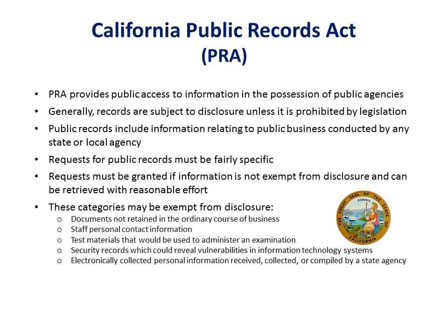The California Public Records Act, or PRA, outlines which information possessed by public agencies is to be considered public information and how a consumer can obtain it. Any records relating to public business whose release is not restricted by legislation must be provided to a member of the public, as long as the request for information is fairly specific and the records can be retrieved with reasonable effort. Some records which may not be released would be, for example,